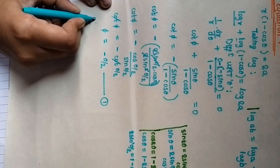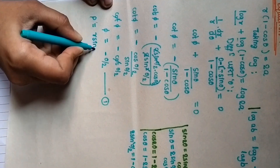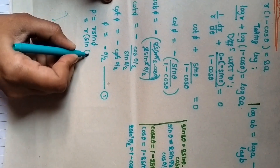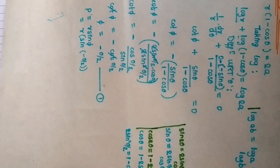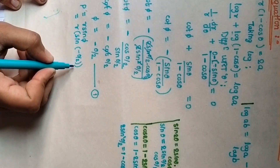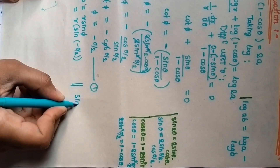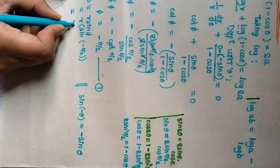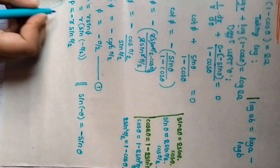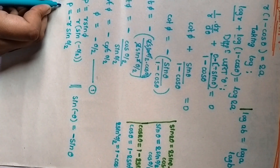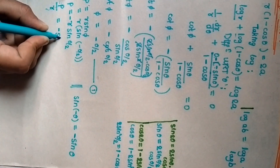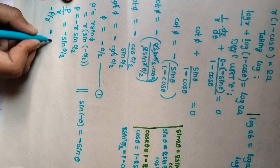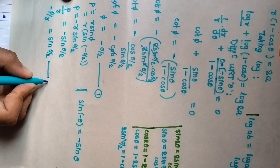We know that p equals r sin φ. We substitute the value of φ, which is minus θ/2. So p equals r sin(minus θ/2), which gives p/r equal to minus sin(θ/2). Taking r to the left side, it becomes p/r equal to minus sin(θ/2), so minus p/r equals sin(θ/2). Consider this equation as 2.